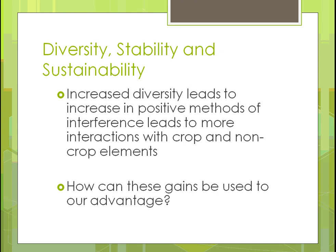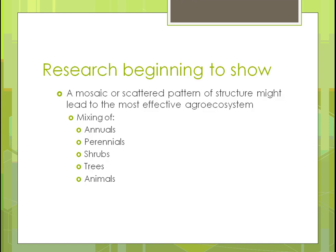With diverse stability and sustainability: increased diversity leads to more positive interactions between crop and non-crop elements, and that natural system starts working for you with more plants and animals present. Research is beginning to show that a mosaic or scattered pattern — mixing annuals, perennials, shrubs, trees, and animals — creates better structure for an ecosystem. The more you mix and scatter different things across your farm, the better that agroecosystem will become.